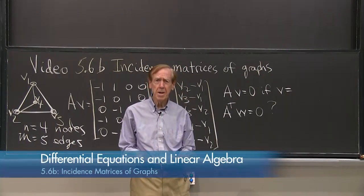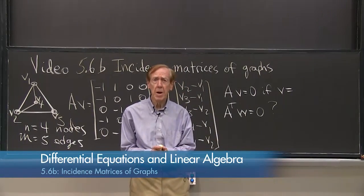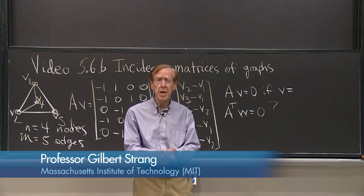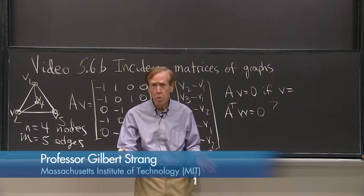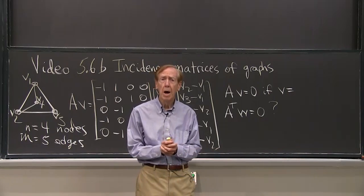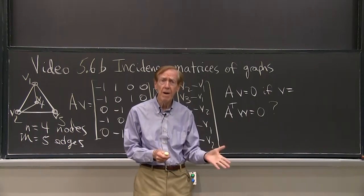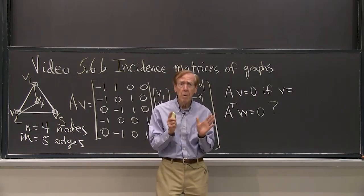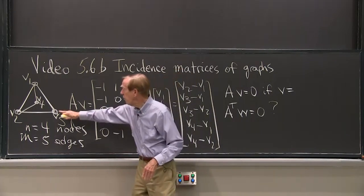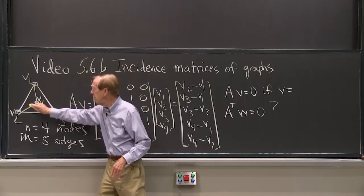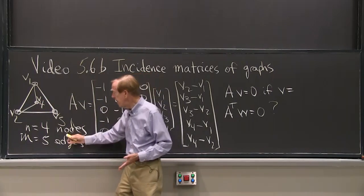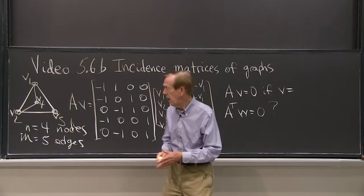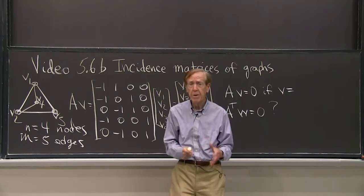OK, I want to continue the last video, which was about incidence matrices and graphs and networks and flows in the network. So that was 5.6. This is 5.6b. And I'll remember the same graph. You remember a graph is some nodes, four nodes here, and some edges, and in this case, five edges. So I have a 5 by 4 matrix.